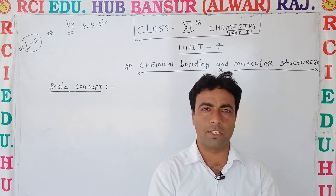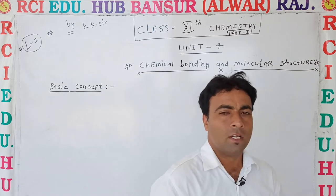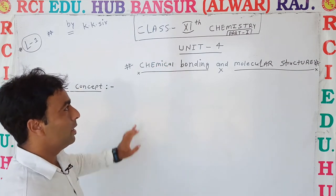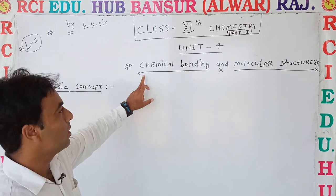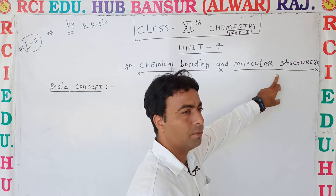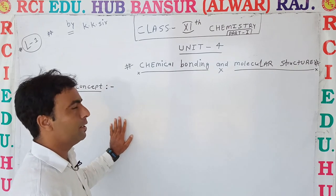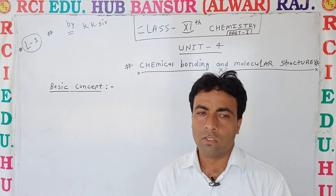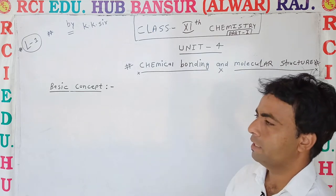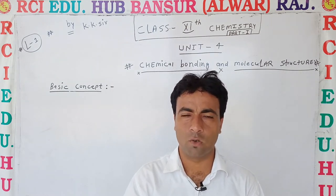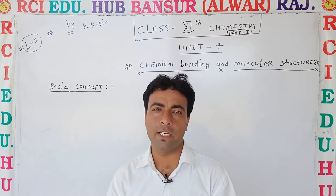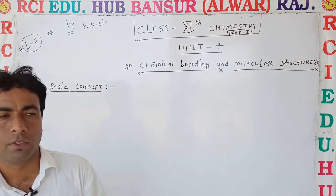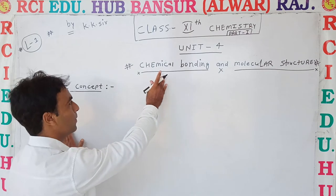Good morning dear students, welcome to Inarche Education Hub Vansur Online Classes. Today we are starting Unit No. 4 Chemistry Part 1, that is Chemical Bonding and Molecular Structure. There will be two parts in this unit: first is Chemical Bonding and second is Molecular Structure. First of all, we will see some basic fundamentals of Chemistry on the basis of which we can easily learn about the Chemical Bonding unit.